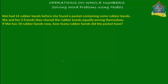Welcome to homecampus.com.sg. Here's a very interesting word problem: May had 14 rubber bands before she found a packet containing some rubber bands. She and her five friends then shared the rubber bands equally among themselves — so there are six people total who shared the rubber bands. If May has 19 rubber bands now, how many rubber bands did the packet have?